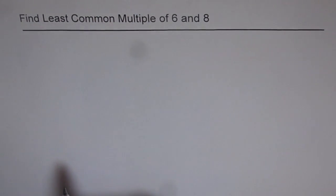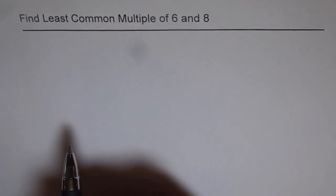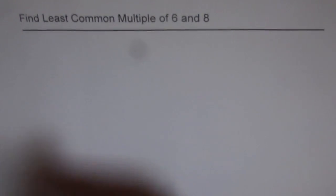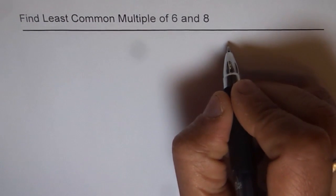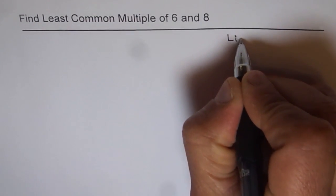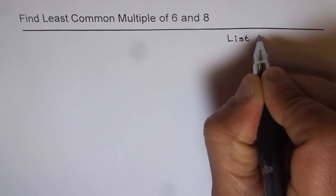So when we are talking about common multiples, it is always between two or more numbers, right? Now we'll adopt the method which we call listing multiples. So this method is by listing multiples.